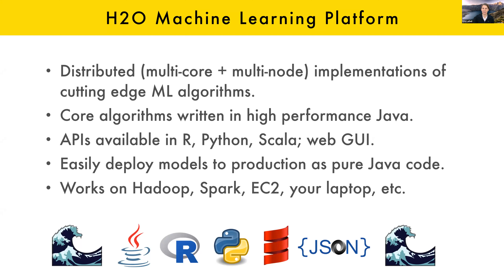One of the other features is you can deploy models pretty easily to production as pure Java code. That was another design element from the very beginning — we wanted something where a data scientist working in R and Python could produce the actual code that goes to production, without having to prototype in R and Python and then rewrite everything in C++ or Java. In the last eight years, a lot of the tooling has gotten a lot better where we see more stuff going into production from native Python, but it used to be a lot more difficult.